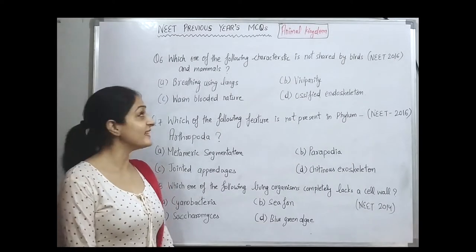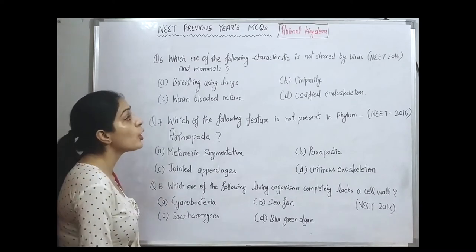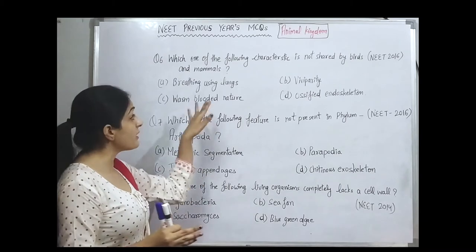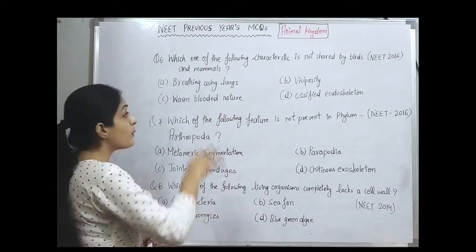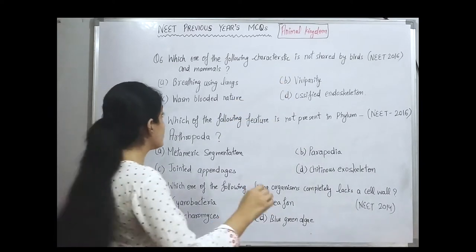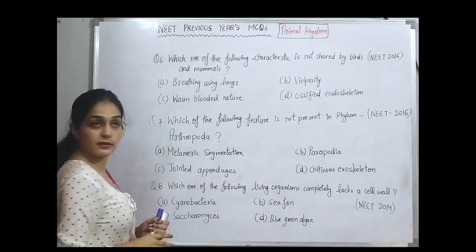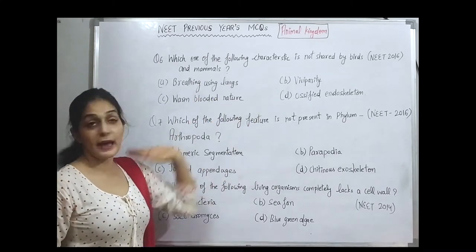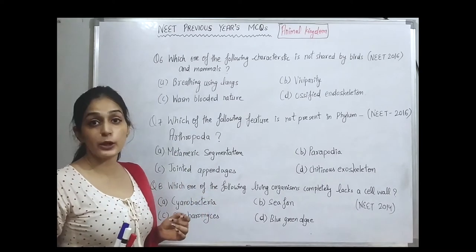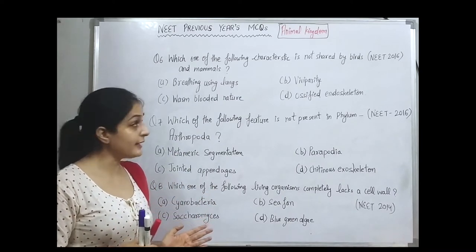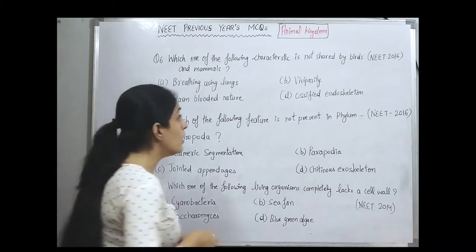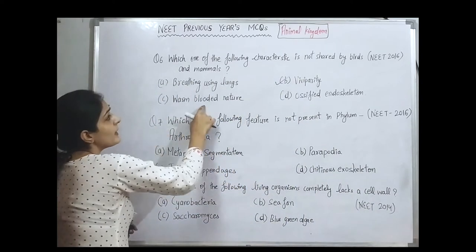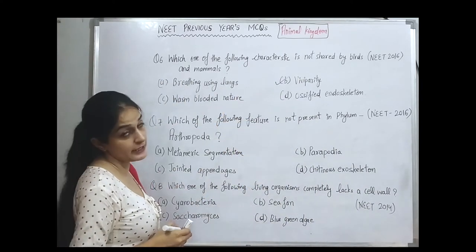Question number six from 2016: which one of the following characteristics is not shared by birds and mammals? This is a straightforward question. Breathing using lungs is shared by both. Warm-blooded nature and ossified endoskeleton are also shared. Viviparity is the correct answer — birds are not viviparous, so viviparity is not shared between birds and mammals.